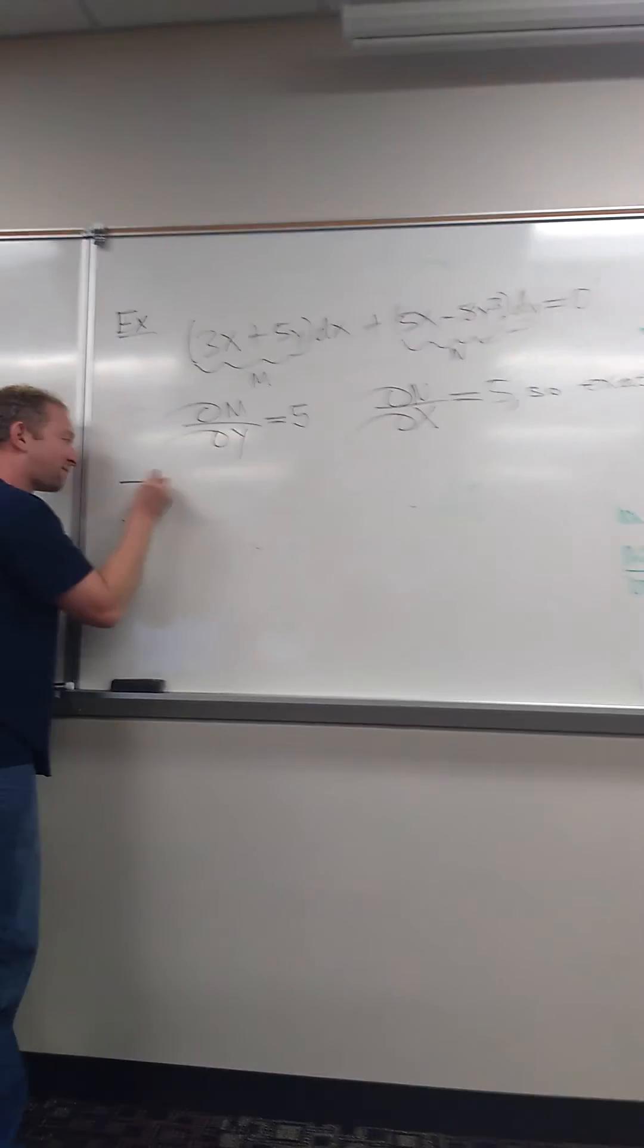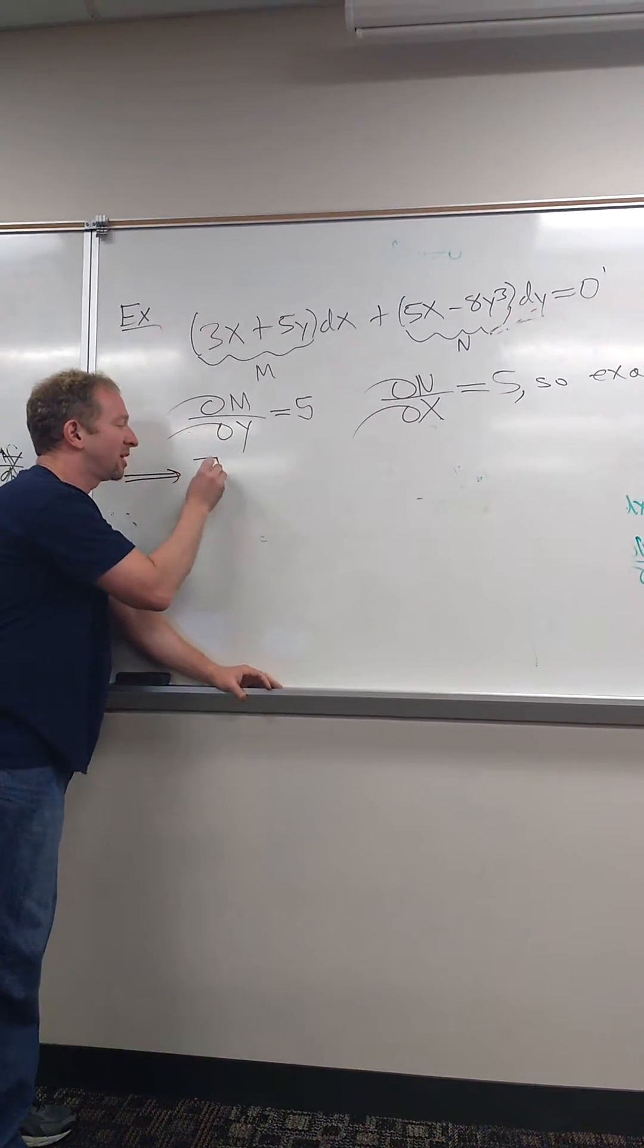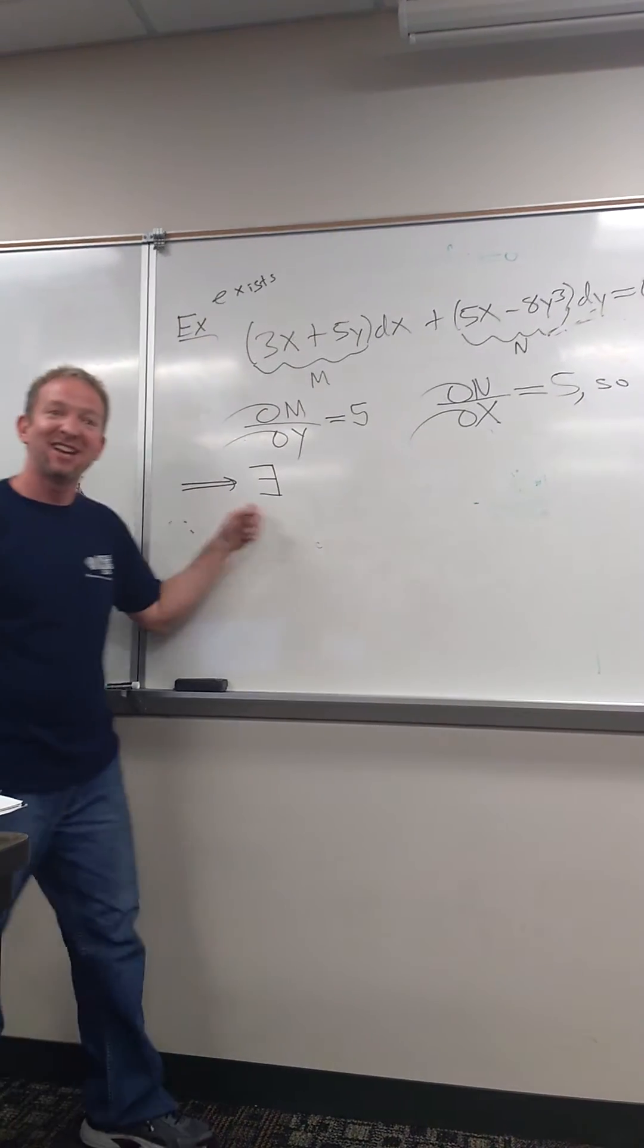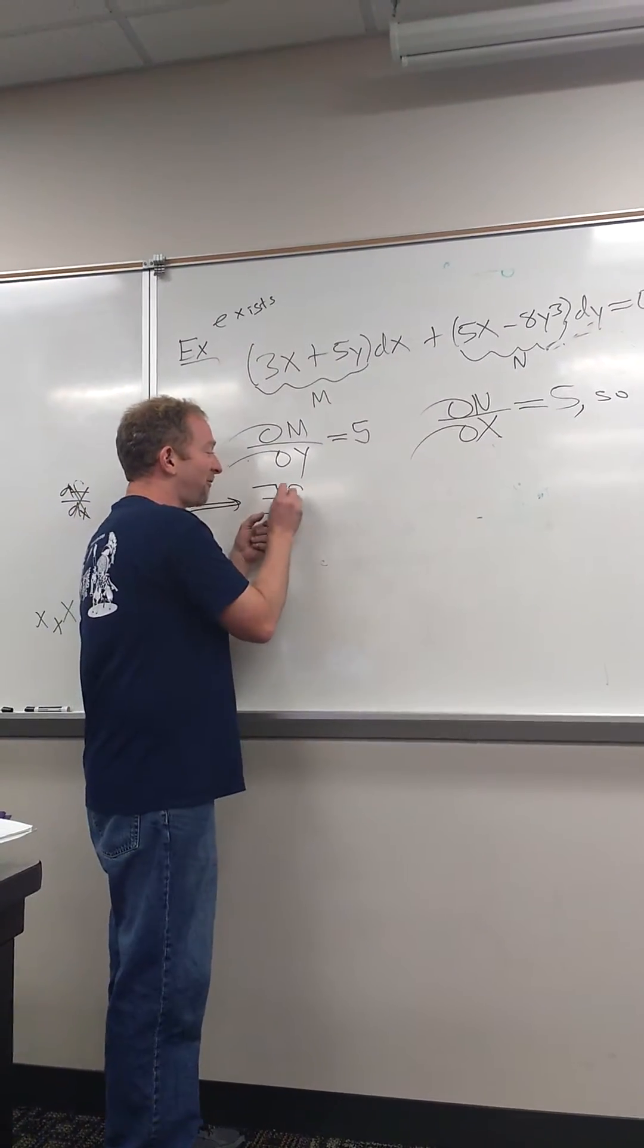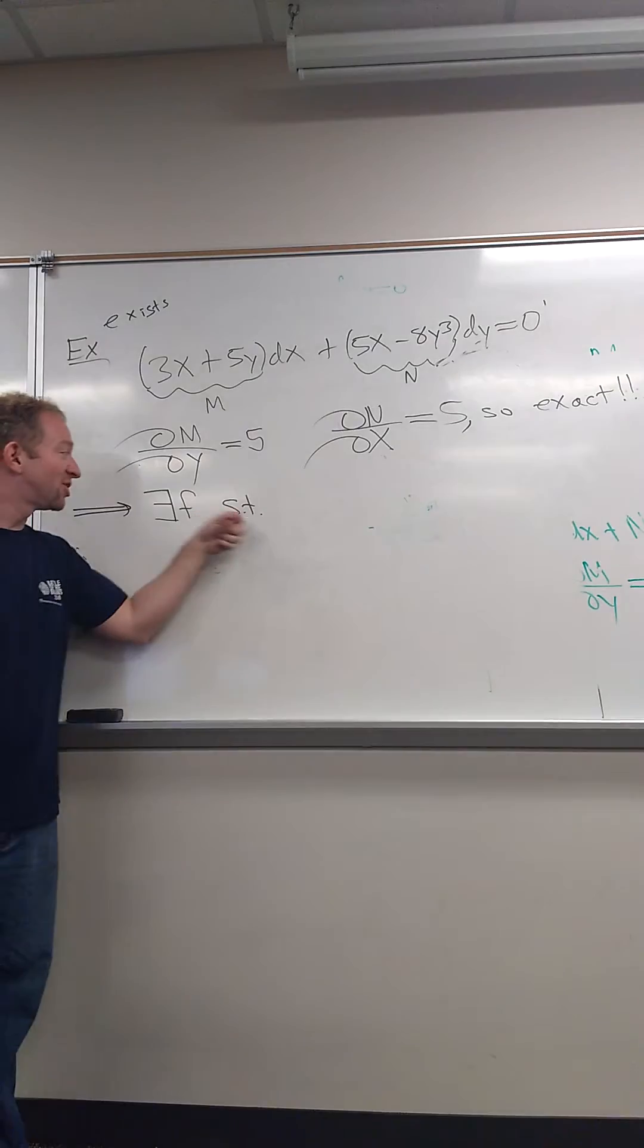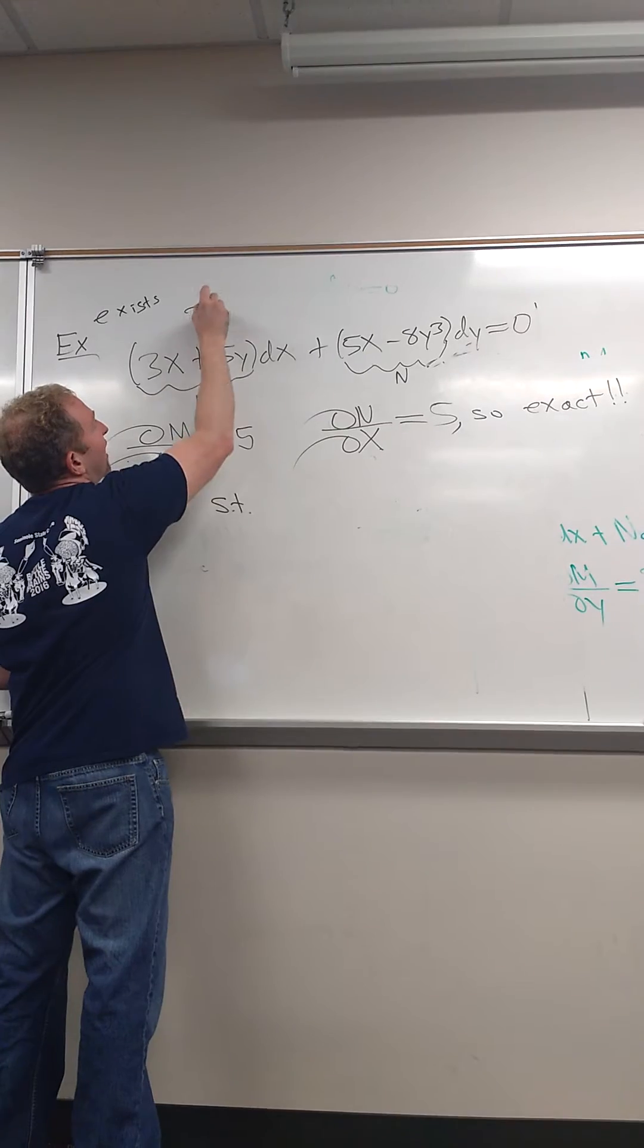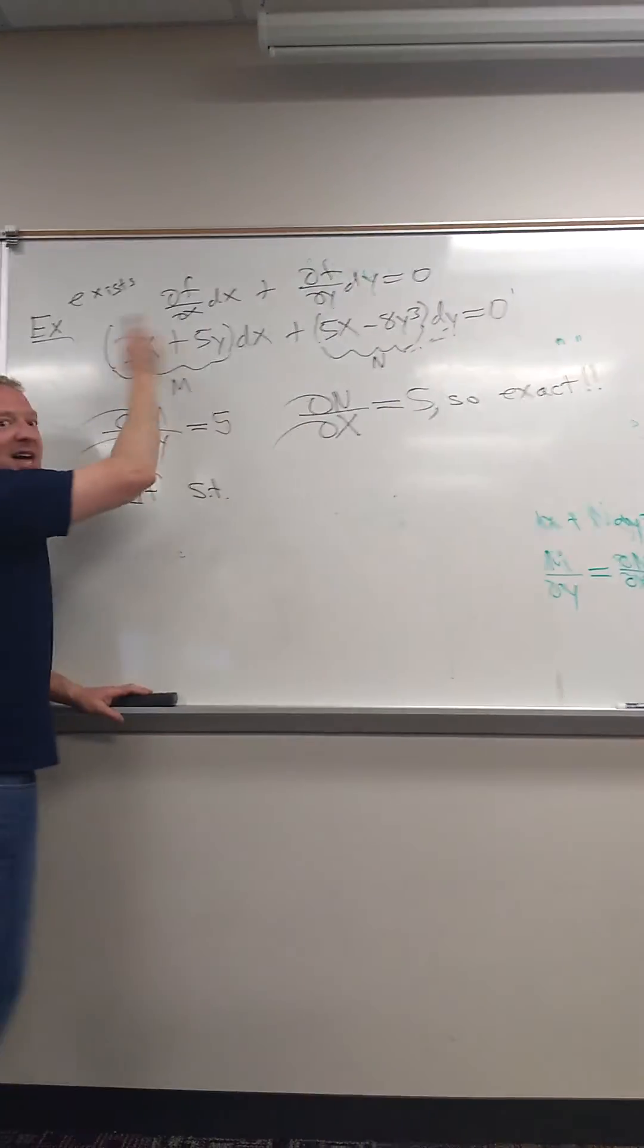So this means, okay, what does this mean? So we're using some high-level notation here. This means there exists. That's what this symbol means in mathematics. Exists. Existential quantifier. There exists an unknown function f. What do you think st means? Such that. Such that. Solid James. Such that there is just a function f such that the total differential of the function is this.